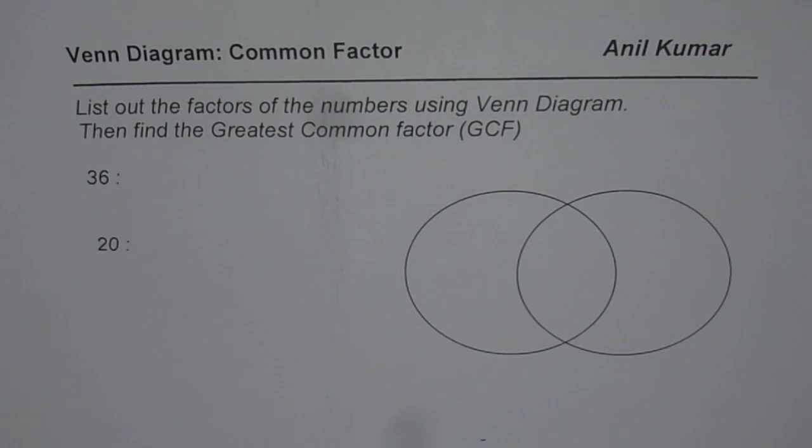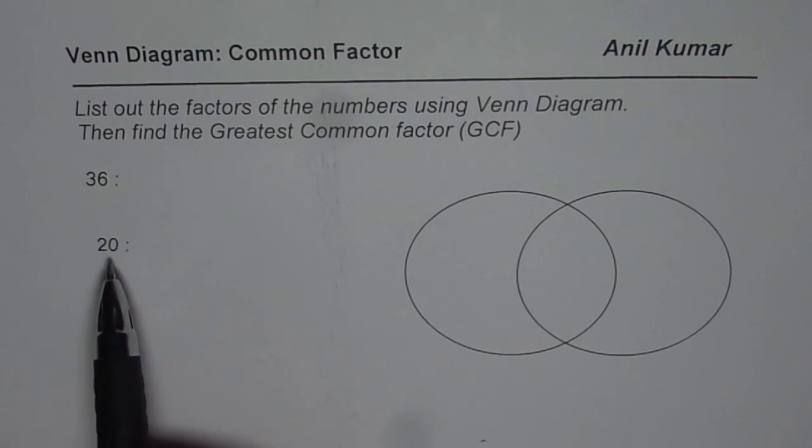Now you need to find the greatest common factor using Venn diagram and the two numbers given to you are 36 and 20.